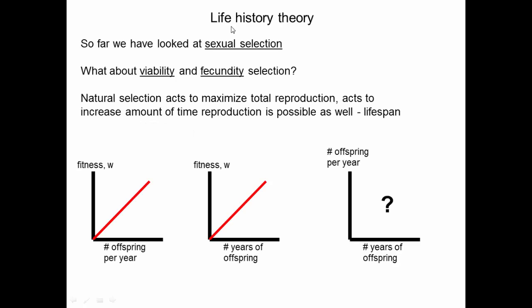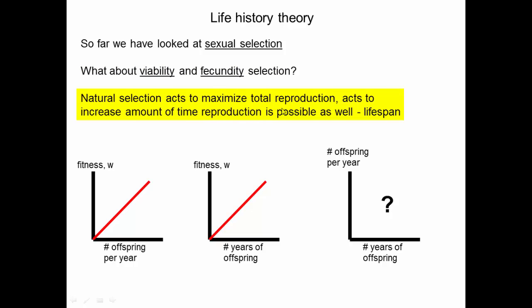This is a field called life history theory. So far we've looked at sexual selection, but what about viability and fecundity selection, which we mentioned when we first introduced natural selection. Natural selection acts to maximize the total reproduction of an organism, because the ones with higher total reproduction pass on their genes more. Longer-lived organisms would reproduce more, so you would expect natural selection to also work on lifespan.